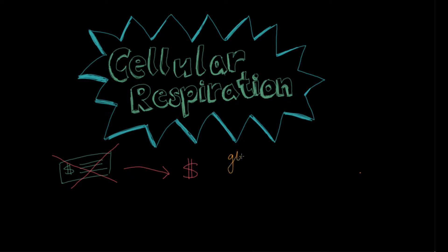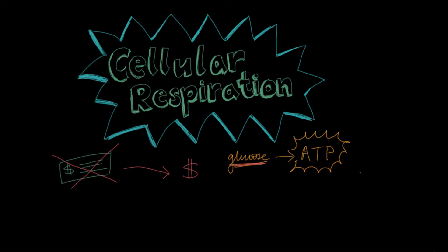Glucose is a high-energy molecule — we know that sugar has loads of energy in it — but you can't use that directly in your cells. Instead, you need to make a molecule called ATP, adenosine triphosphate. Adenosine triphosphate is the energy currency your cells actually use. The process of extracting energy from glucose to make ATP is cellular respiration.